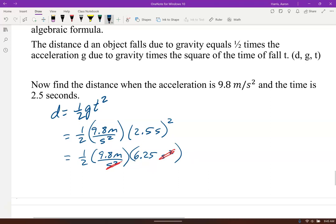And now we just gotta multiply this all out. So we have one-half times 9.8 meters is over one, 6.25 that's over one. 9.8 and 6.25 I got 61.25